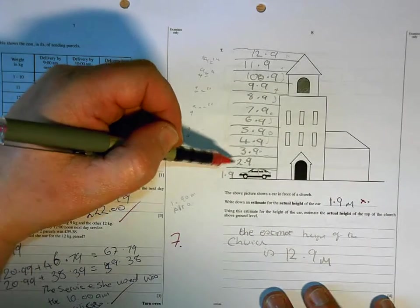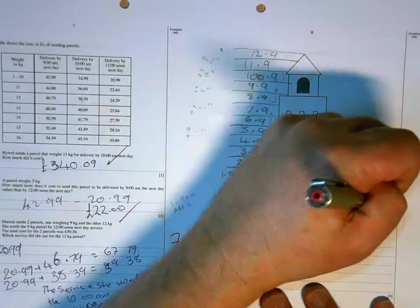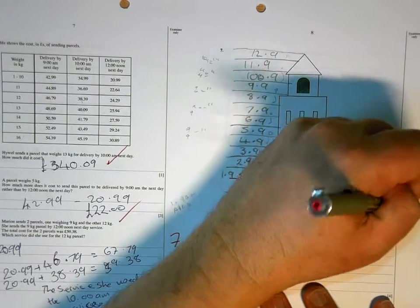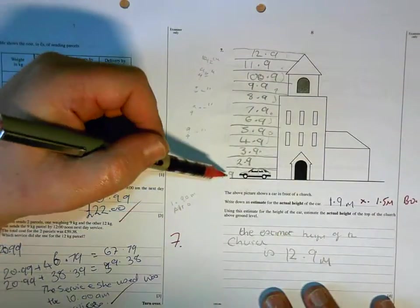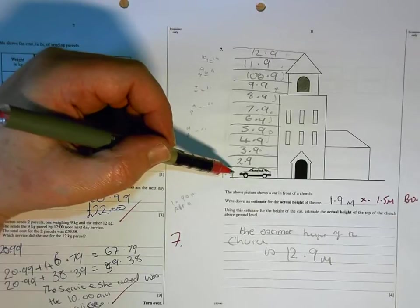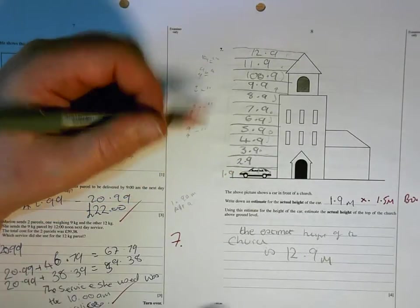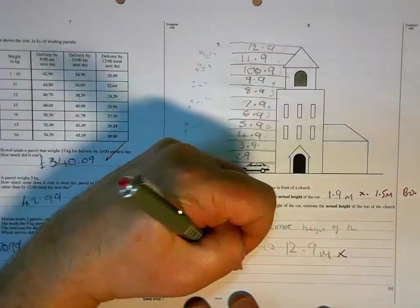And then what you need to do is see how many times that fits in. And what you've just done is counted up 12, but instead of then going 12 lots of 1.9, you're just counting up in 1s. So your method is wrong there as well.